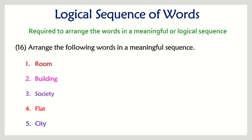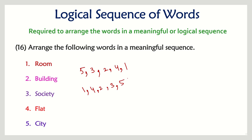Next question: room, building, society, flat, and city — all related to a city. Arranged by size from least to greatest: room is smallest, after room comes flat, after flat comes building, after building comes society, and after society comes city. You can also arrange from greatest to least — follow the pattern based on the options given.